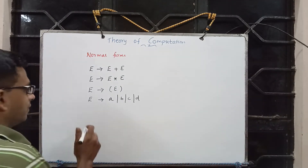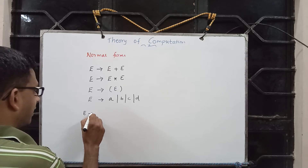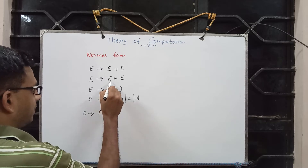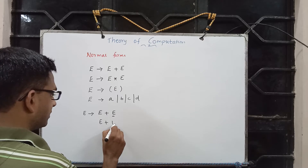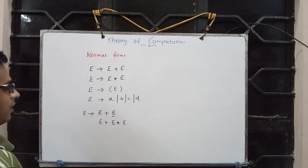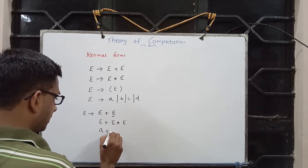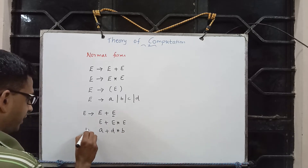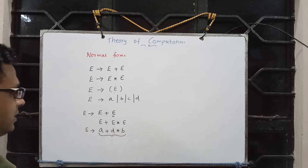For example, let me take E implies E plus E, then choose this rule again, so it becomes E plus E star E. Now I substitute A for the first E, D for the second, and B for the third, and we get the expression A plus D star B starting from E.